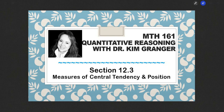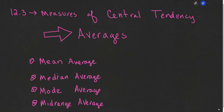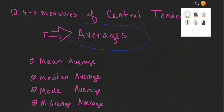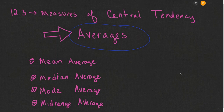As we continue our study of statistics, we're now going to look at the measures of central tendency and position. The measures of central tendency are better known as averages. So though this phrase 'measures of central tendency' may be new to you, average probably is not a new topic for you. When we talk about measures of central tendency, we're simply talking about averages.